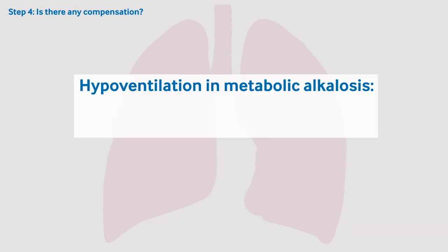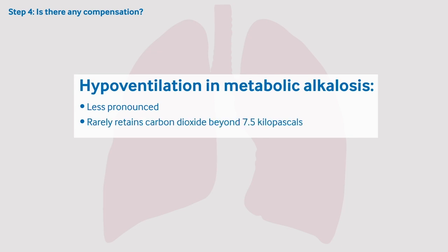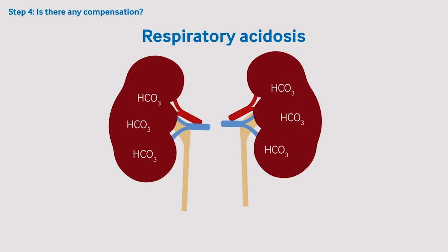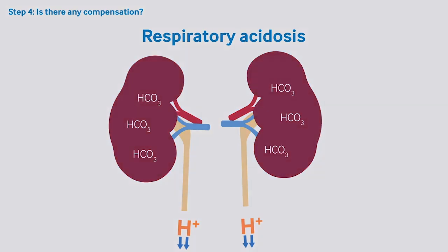Hypoventilation in metabolic alkalosis is less pronounced and rarely retains carbon dioxide beyond 7.5 kPa. If a patient has a respiratory acidosis, then the kidneys attempt to retain more bicarbonate ions and to excrete more hydrogen ions in order to raise the pH. This takes several days to achieve, so tends to be evident in chronic respiratory conditions.